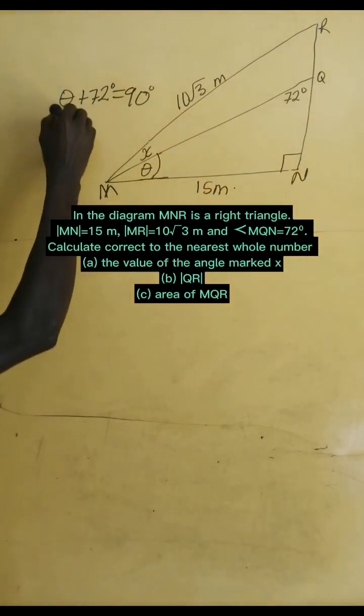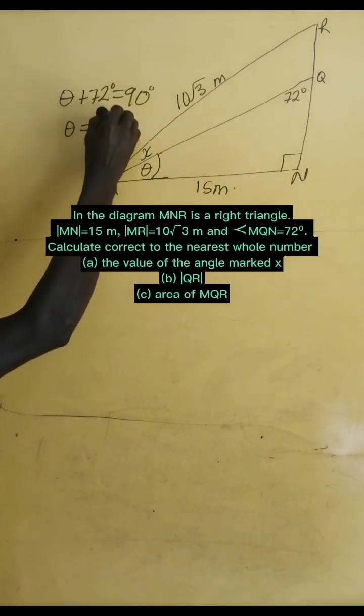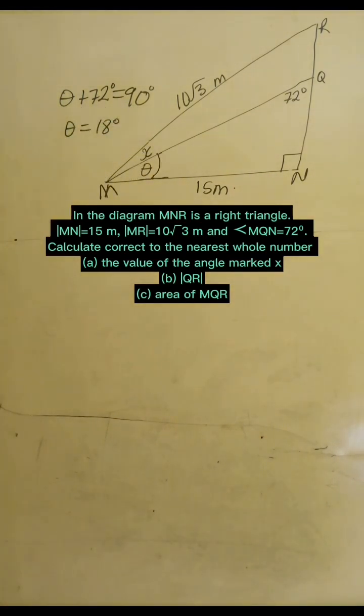Since this triangle is a right angle triangle, if we have theta equals 90 degrees minus 72 degrees, that gives 18 degrees.